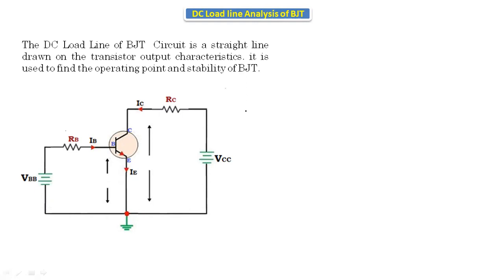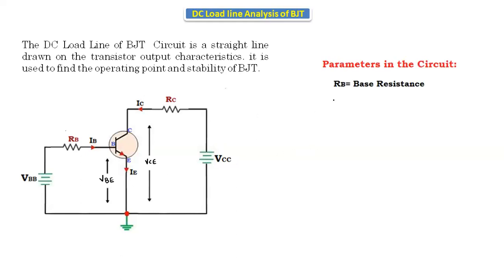We will get two points, and these two points we will indicate on the output characteristics and draw a line — that line is called the DC load line. Now let's see the procedure. Here we are taking the common emitter configuration circuit, where the voltage between base and emitter is VBE, and the voltage between collector and emitter is VCE. The emitter is connected to ground, that's why it is called common emitter configuration.